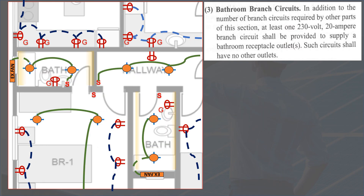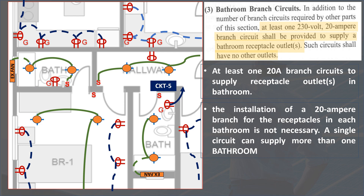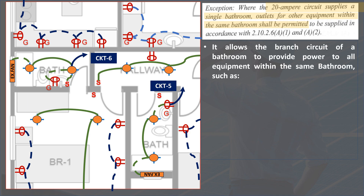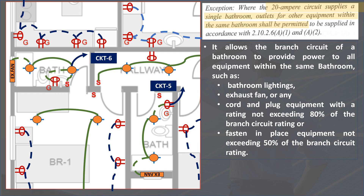For branch circuit requirements for the bathroom, paragraph 3 of the same section states that in addition to the number of branch circuits required by other parts of this section, at least one 230V, 20A branch circuit shall be provided to supply bathroom receptacle outlets, and such circuits shall have no other outlets. The bathroom must have at least one 20A branch circuit to supply receptacle outlets. A single circuit can supply more than one bathroom. Exception: where the 20A circuit supplies a single bathroom, outlets for other equipment within the same bathroom — such as bathroom lighting, exhaust fan, or cord and plug equipment not exceeding 80% of the branch circuit rating, or fasten-in-place equipment not exceeding 50% of the branch circuit rating — shall be permitted.